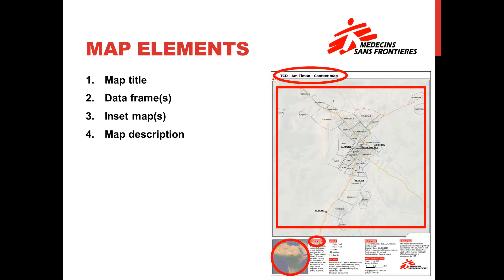4. Description of map. Map descriptions leave the user in no doubt about what a map shows or the purpose of a map. Map descriptions can also highlight maps' most important features, or analyses' most significant results. The map on the right's map description reiterates what the map shows, and explains the map provides context for a series of maps charting the evolution of a hepatitis C virus outbreak in the city.